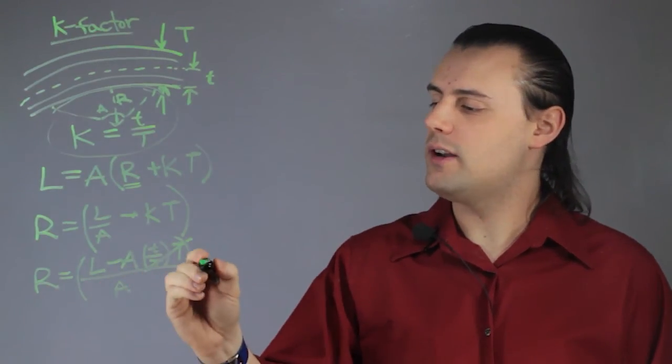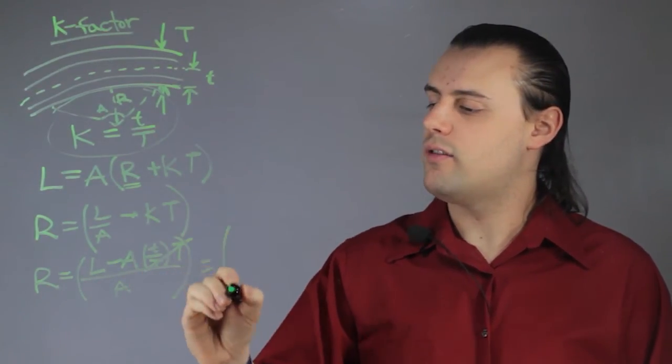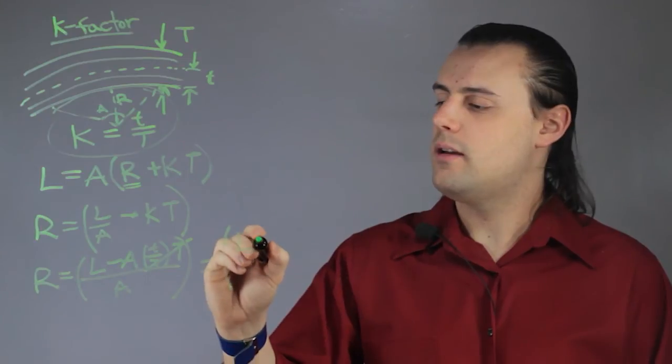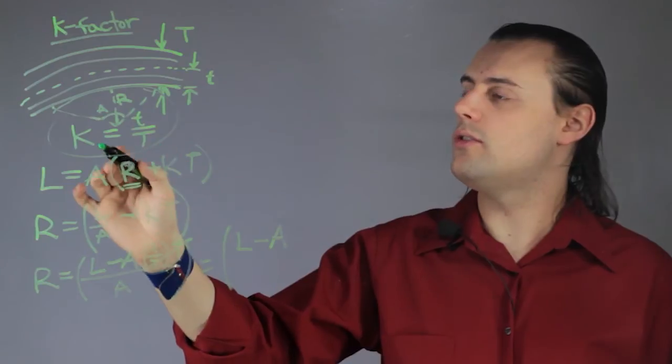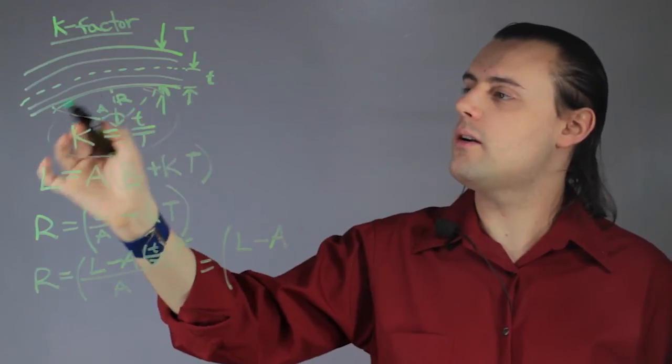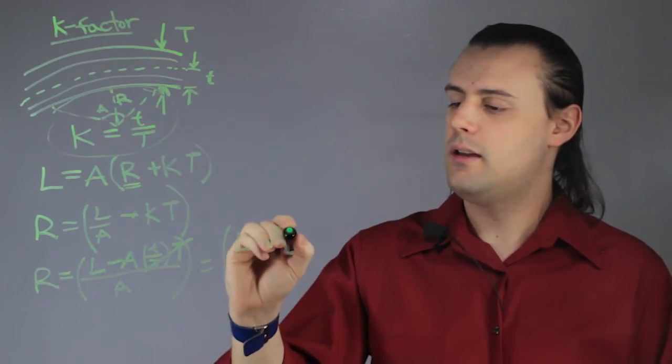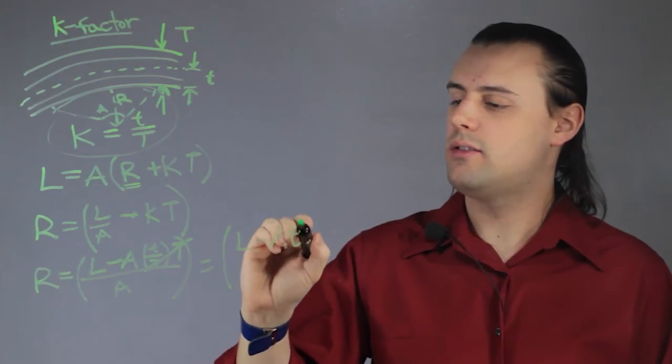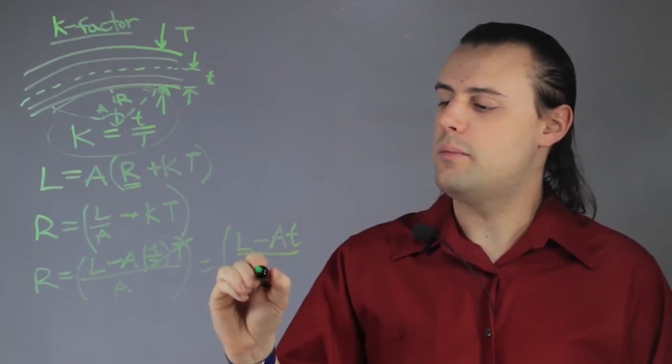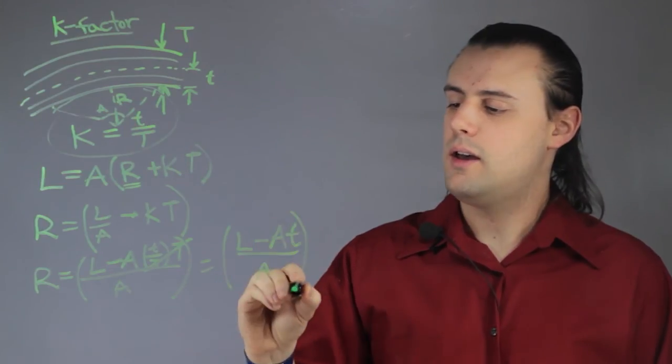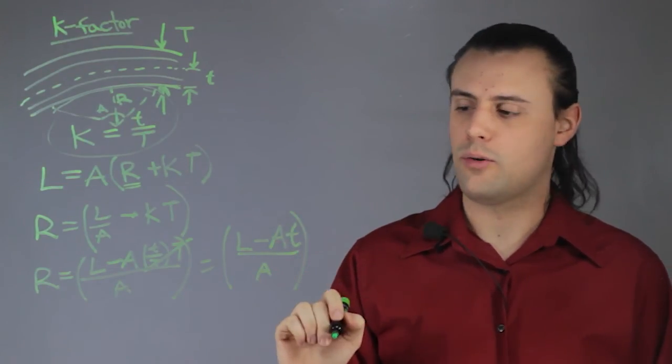So we have a simplified expression. We have the bend allowance minus the angle for which we can draw a circle in the part of the laminate that bends times this distance to the neutral line divided by our angle again.